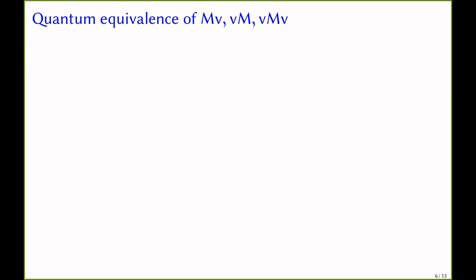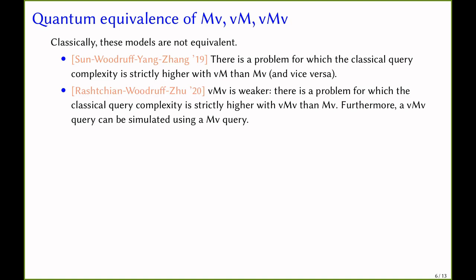Now let's talk about our results. First, we show that with access to these functions in superposition, matrix-vector, vector-matrix, and vector-matrix-vector products are equivalent, meaning you can simulate one oracle model using a constant number of queries to the other. This is in contrast to the classical setting, where these query models are not equivalent. In particular, from previous work, there is a problem for which the classical query complexity is strictly higher with VM than MV and vice versa, implying VM and MV oracles are in general incomparable.